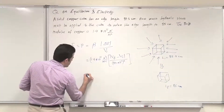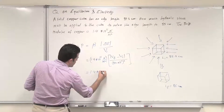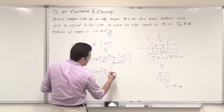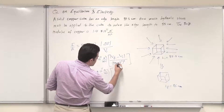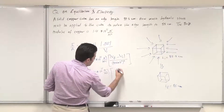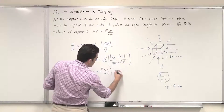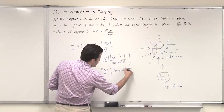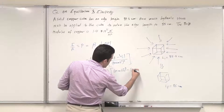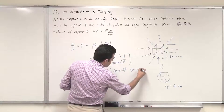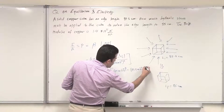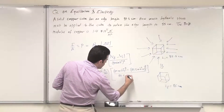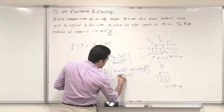The bulk modulus is 1.4 × 10 to the power 11 newton per meter squared. V final is 85 × 10 to the minus 2 meters, cubed. V initial is 85.5 × 10 to the minus 2 meters, cubed. The denominator is also 85.5 × 10 to the minus 2, cubed.